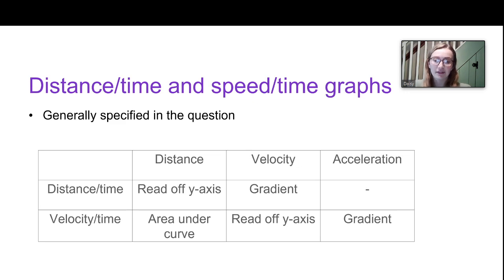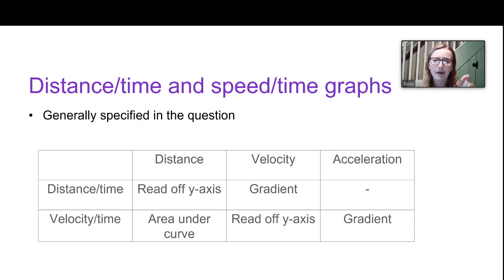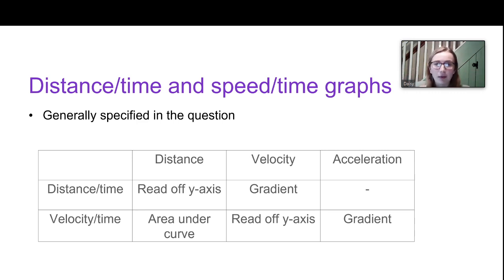The first approach is using distance time or speed time graphs. It's generally not too hard to spot when this is relevant because there will either be a graph in the question to interpret, or axes on which to draw a graph. If you've got a distance time or displacement time graph and you want to find distance or displacement, just read off the y-axis. If you want to find velocity or speed, you need to find the gradient, since velocity is the rate of change of displacement with respect to time.